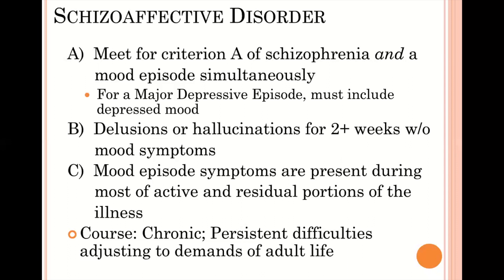Individuals with active psychosis and active mood episodes simultaneously are often far more severe than those with just schizophrenia or just mood episodes. They often have chronic difficulties adjusting, holding a job, become socially isolated, struggle with basic self-care, and often have thoughts of suicide. Finding the correct medication and dosing is very difficult, and treatment typically requires combinations of antipsychotics, mood stabilizers, and antidepressants, plus psychotherapy — individual, group, or family. In cases where other treatments have failed, electroconvulsive therapy (ECT) has been found to be helpful.